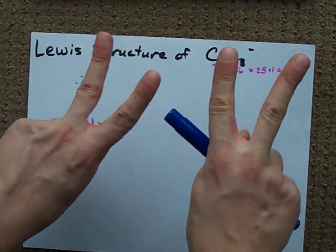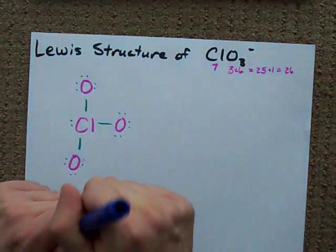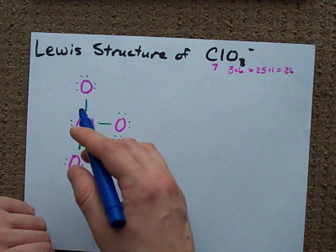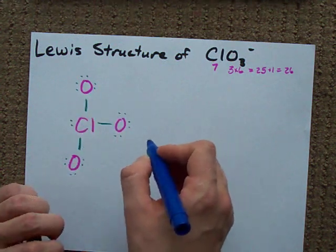You need to consider something called formal charge here. The formal charge is the number of electrons that the atom brought, minus the number of electrons that the atom has.